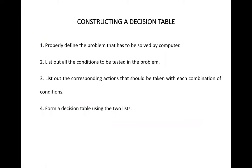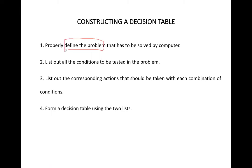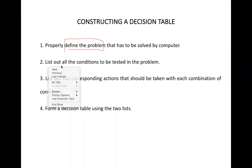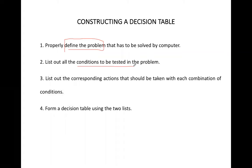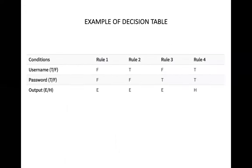Now let's discuss how to construct a decision table. First of all, you need to properly define the problem you want to solve. Second, list out all the conditions to be tested. Third, list the actions to be taken against those conditions. Fourth, form the decision table using these two lists — the conditions list and the actions list.